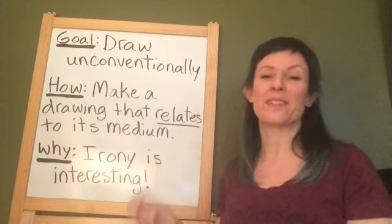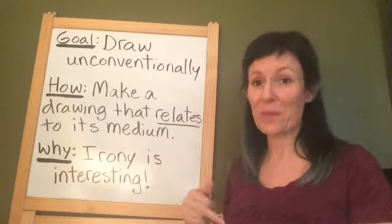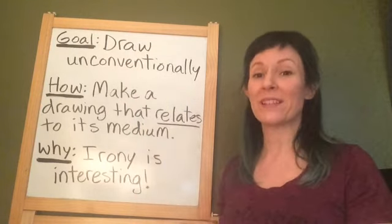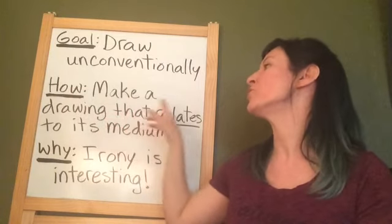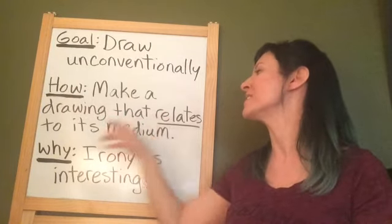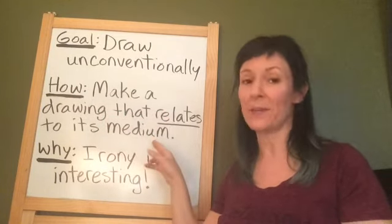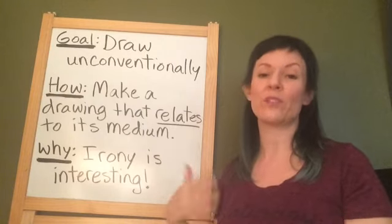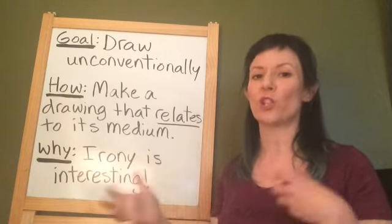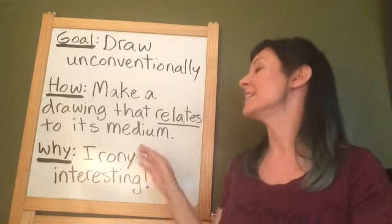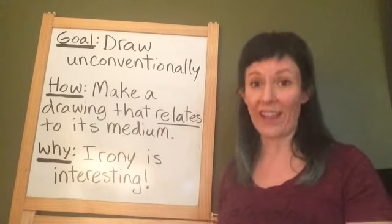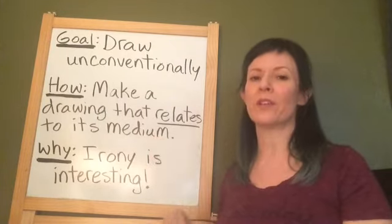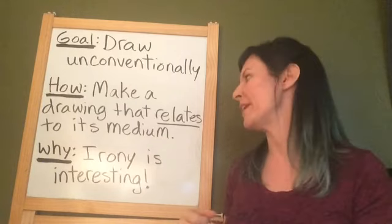Our goal is actually the same as it was in the last video — draw unconventionally. But here's where it's a little different: you're going to make a drawing that relates to its medium. Last time we were experimenting with different unconventional art media. Today you are going to make an actual drawing and it's going to relate to its medium or material. I'll show you some examples in just a minute.